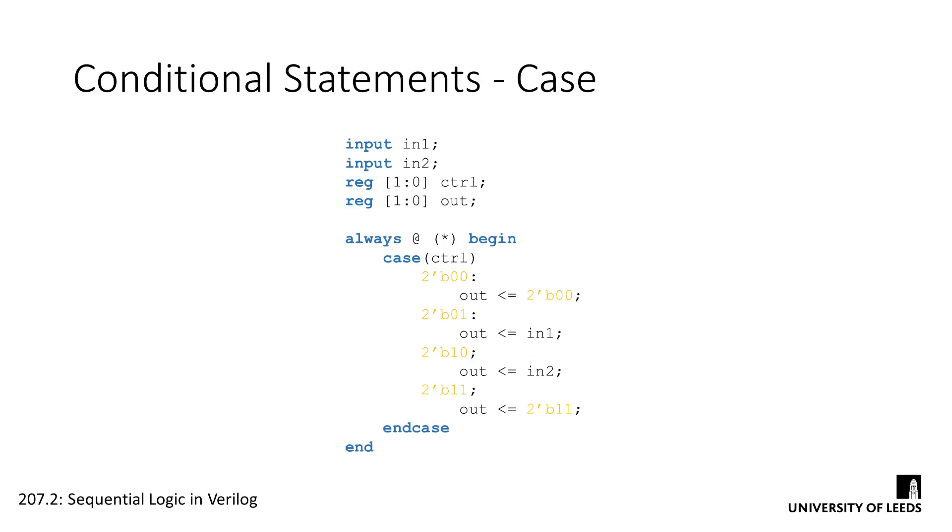Case statements are similar to if statements. They act as a decision instruction which chooses an outcome for execution, depending on the state of a specific signal. The outcome chosen is the one with a value that matches that of the case statement. So case statements in Verilog are used to form the foundations of state machines, as you'll look at in a later module.